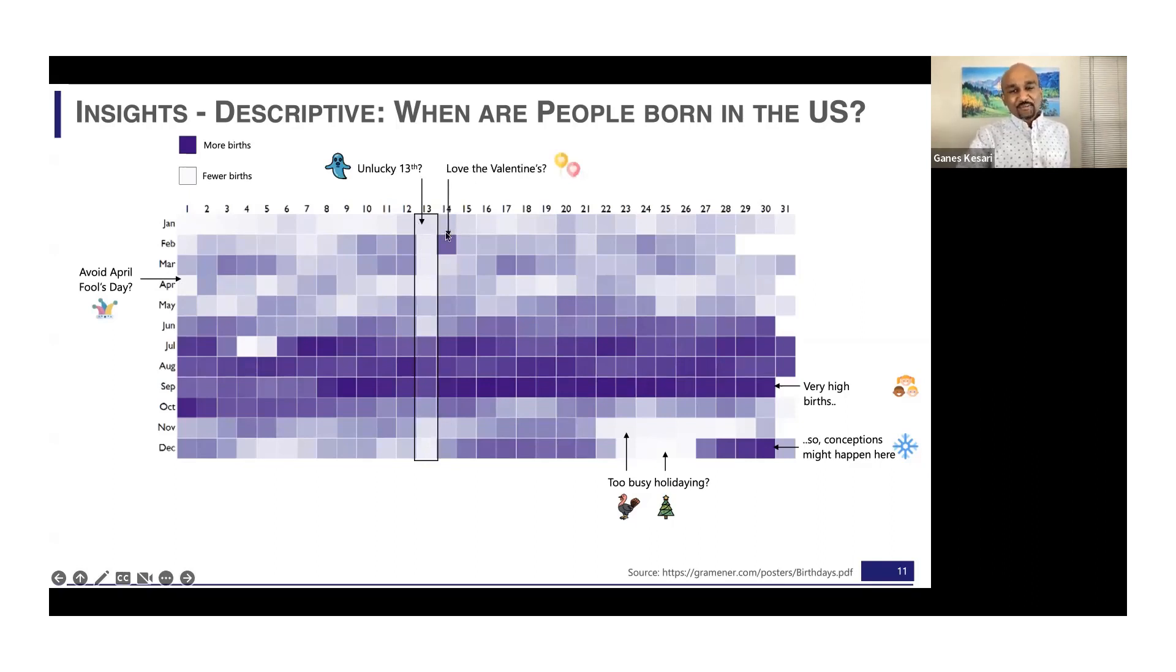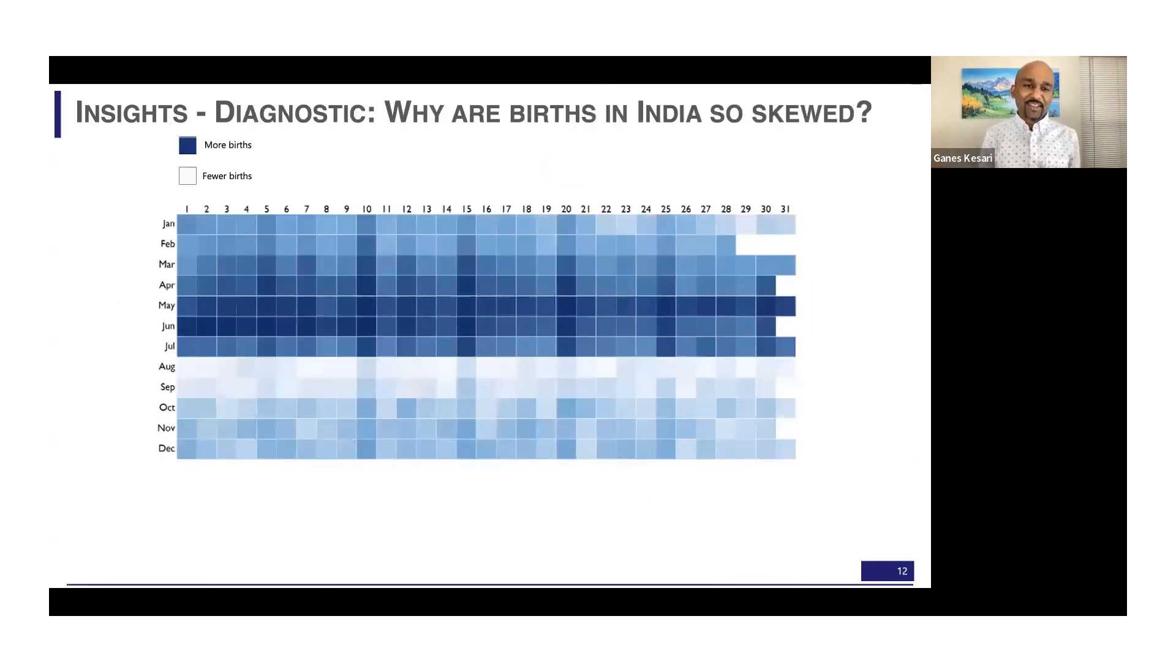So this is the pattern for the US. We were curious how does it look for India where we had a treasure trove of public data. This is what the pattern for India, so you can see here it's completely different. What do you notice? A lot of births, very few births in the second half of the year. A lot of births in the first half.